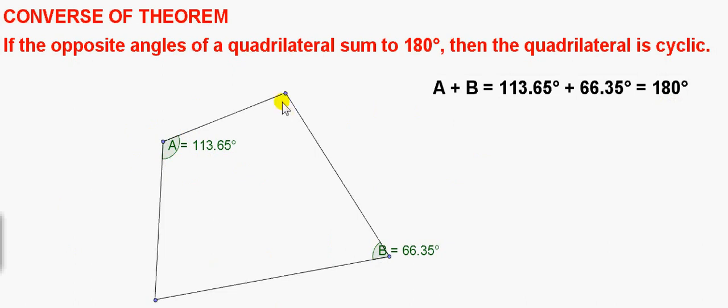Notice that we don't have to look at the other pair of opposite angles. If A plus B equals 180, then the other pair must sum to 180 also, since the four angles in any quadrilateral sum to 360 degrees. So we only have to look to one pair. If one pair of them sum to 180, then it must be a cyclic quadrilateral.